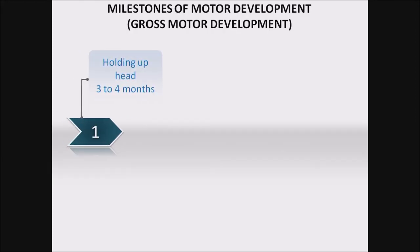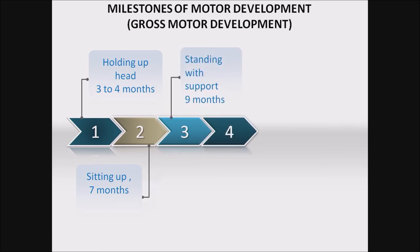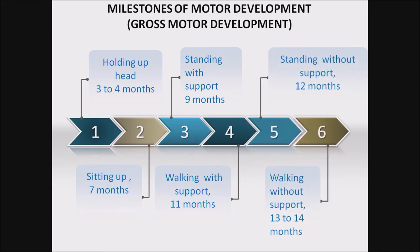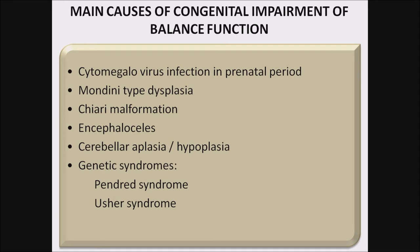Congenital vestibular impairment. Milestones of motor development: holding up head at 3–4 months, sitting up at 7 months, standing with support at 9 months, walking with support at 11 months, standing without support at 12 months, and walking without support at 13–14 months. Common causes of congenital impairment of balance function: cytomegalovirus infection in the prenatal period, Mondini-type dysplasia with sac-shaped otolith and absence of semicircular canals, Arnold-Chiari malformation, encephalocele, cerebellar aplasia, hypoplasia, genetic syndromes like Pendred syndrome, and Usher syndrome with dilated vestibular aqueduct.